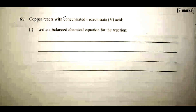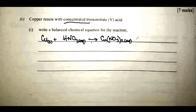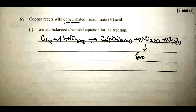The next question says copper reacts with concentrated nitrate(V) acid — write a balanced chemical equation. The key word here is 'concentrated.' So: Cu(s) + 4HNO₃ → Cu(NO₃)₂ + 2NO₂(g) + 2H₂O. HNO₃ is a strong oxidizing agent, so it oxidizes copper to Cu²⁺ and is itself reduced to NO₂, a brown gas. Balance: make it 2, 4, 2 as needed.